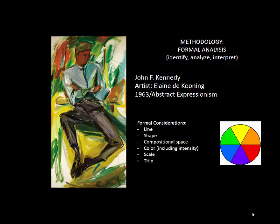Here we have a portrait by the artist Elaine de Kooning, who was a member of the Abstract Expressionist style. This is a somewhat rare Abstract Expressionist image in that it's quite representational — we can see what we're looking at — which makes it relatively straightforward for conducting a formal analysis. When I do formal analysis, I tend to combine the first two steps: identifying and analyzing at the same time, picking out important principles of design and formal elements, then attaching meaning or suggesting why the artist selected them.